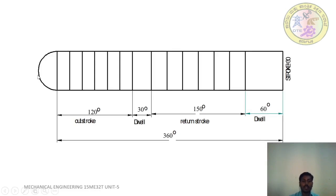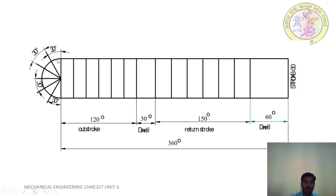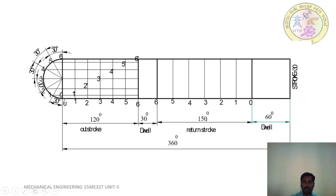Draw a semicircle with radius equal to half the lift or stroke. Since lift is 30 mm, radius is 15 mm. Divide the semicircle into 6 equal parts — that is 180 divided by 6 equals 30 degrees each. Name the points on the horizontal line as 0, 1, 2, 3, 4, 5, 6.